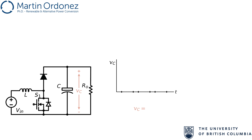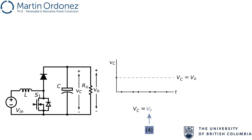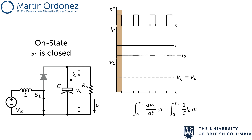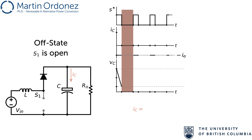The voltage in the capacitor, Vc, is equal to the output voltage, V_o. The mean value of the capacitor voltage is equal to the mean output voltage, and by using the input-output relationship, we can see that it is equal to the input voltage, V_in, divided by 1 minus the duty cycle, D. When the switch is on, the current in the capacitor, Ic, is equal to the negative output current, I_o. Then, consider the capacitor differential equation which relates the derivative of voltage with the capacitor current.